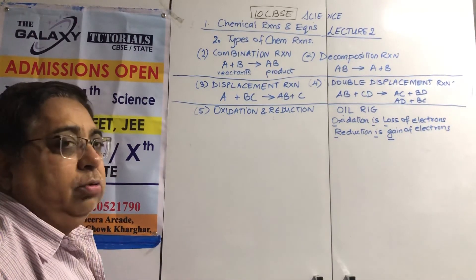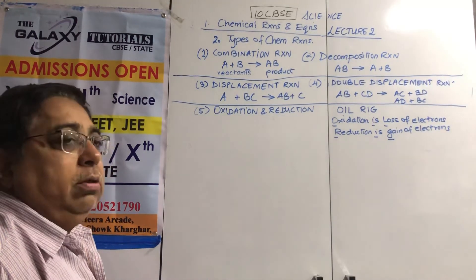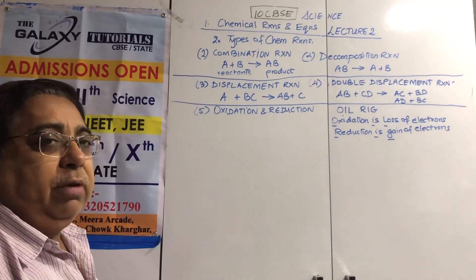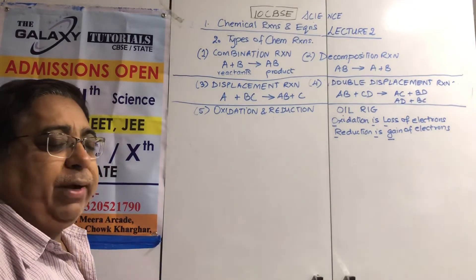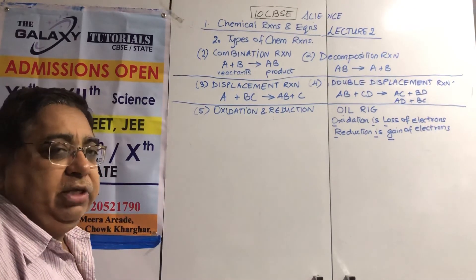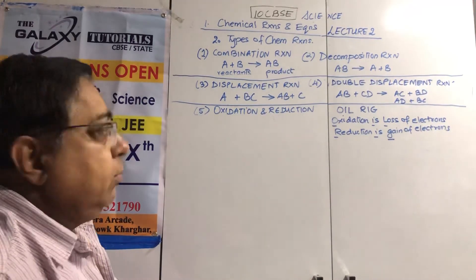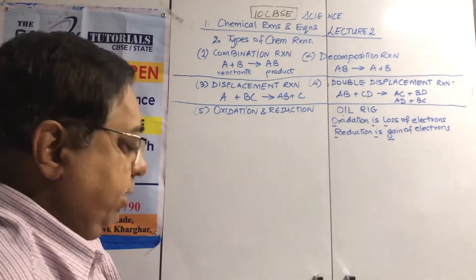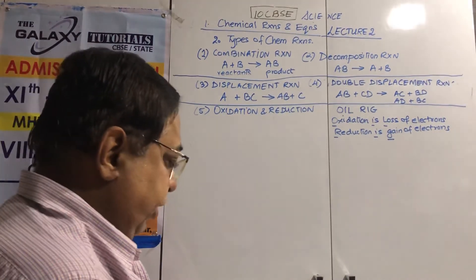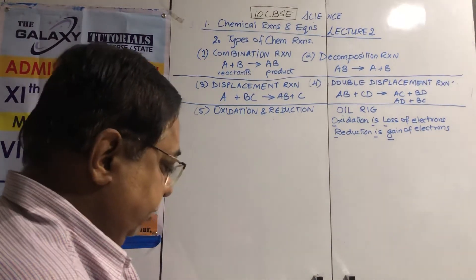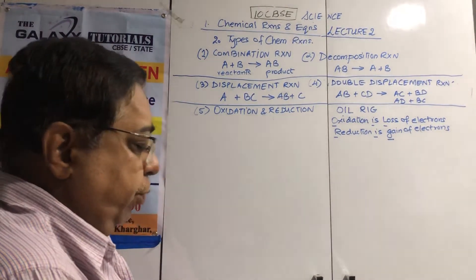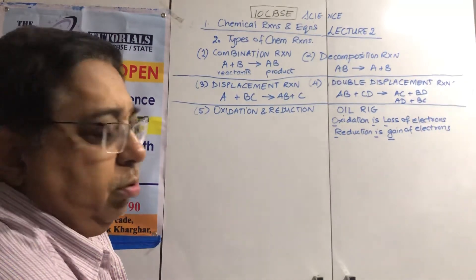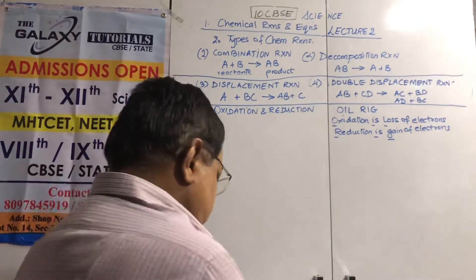Of course, you must know the electronic configuration — that means the periodic table of the first 20 elements at least. Let us look at oxidation-reduction reactions and equations from the textbook.